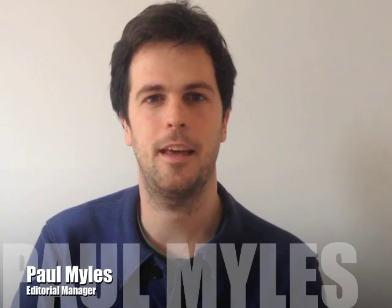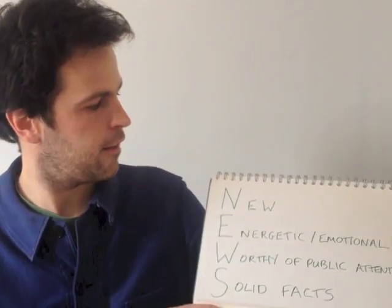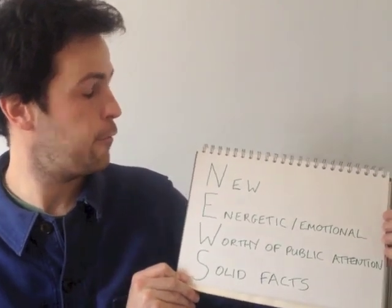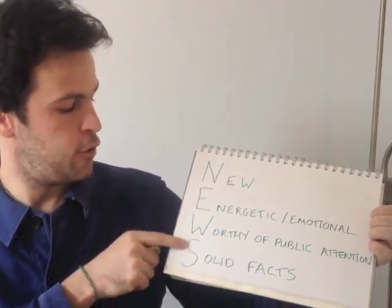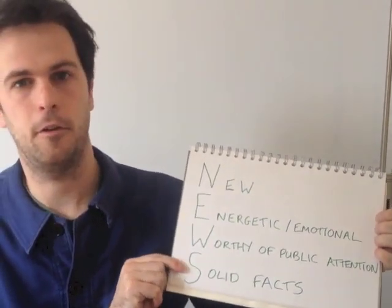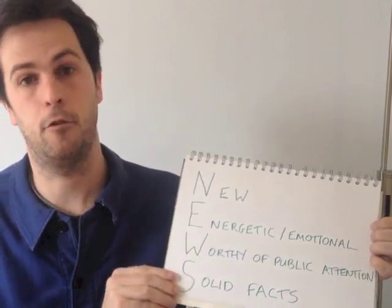Hi, my name is Paul Miles and I'm Editorial Manager at On Our Radar, and I have worked on stories in the UK, Africa and India. On this flip chart we have the four key components for a good story and they spell out NEWS. I'm going to talk you through them quickly. The first one, N, is for new.